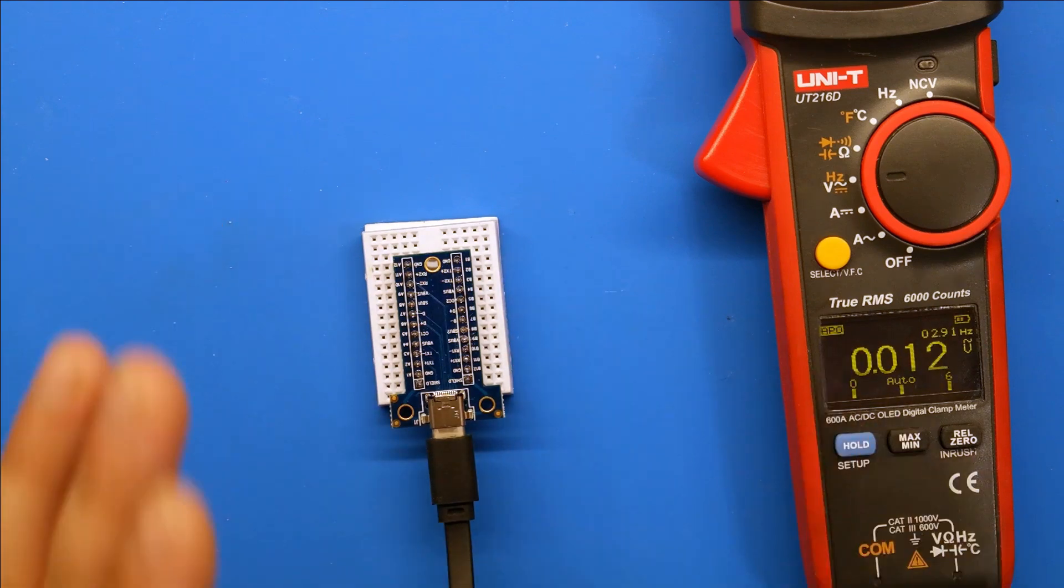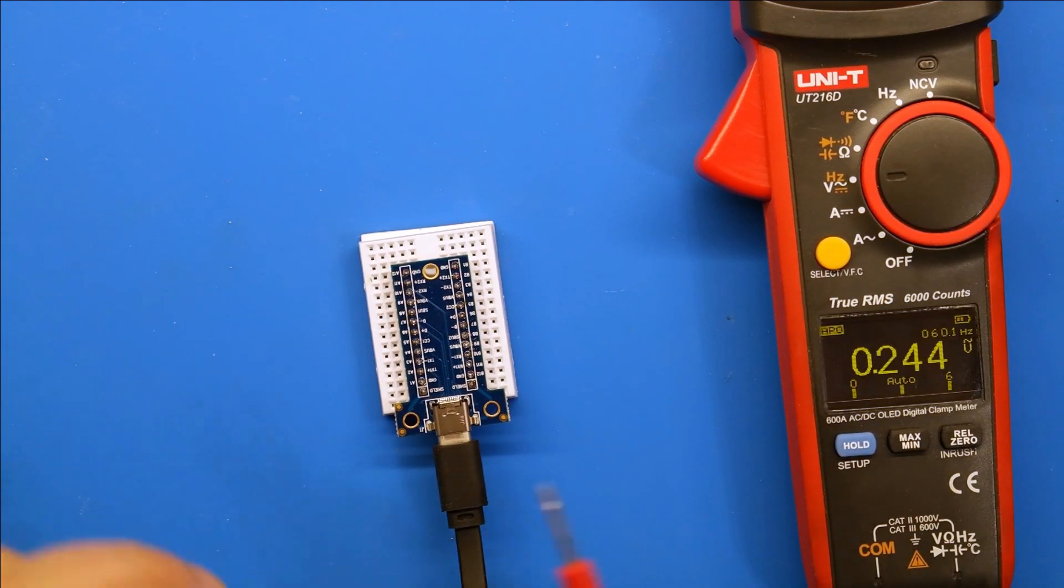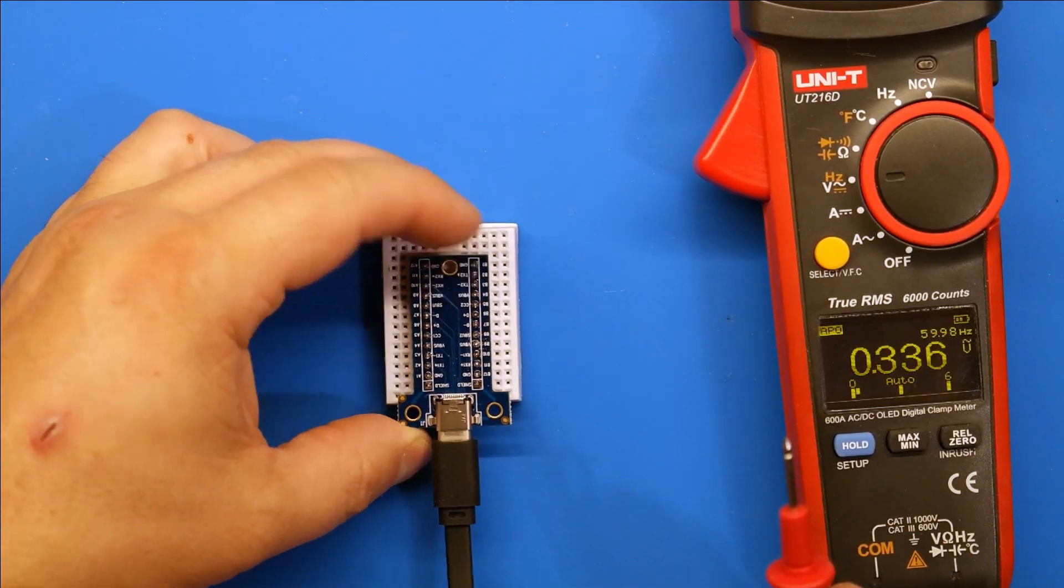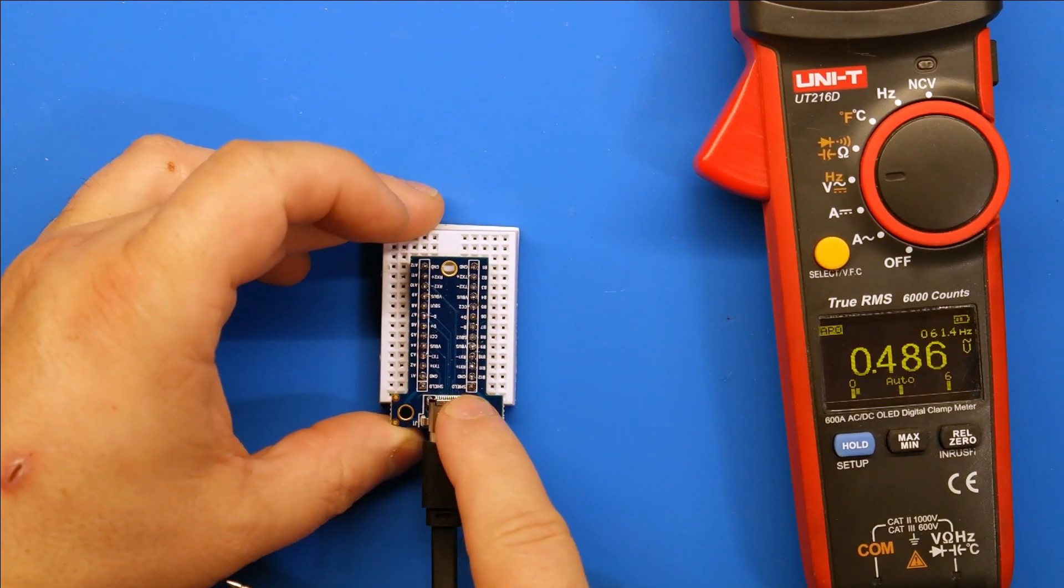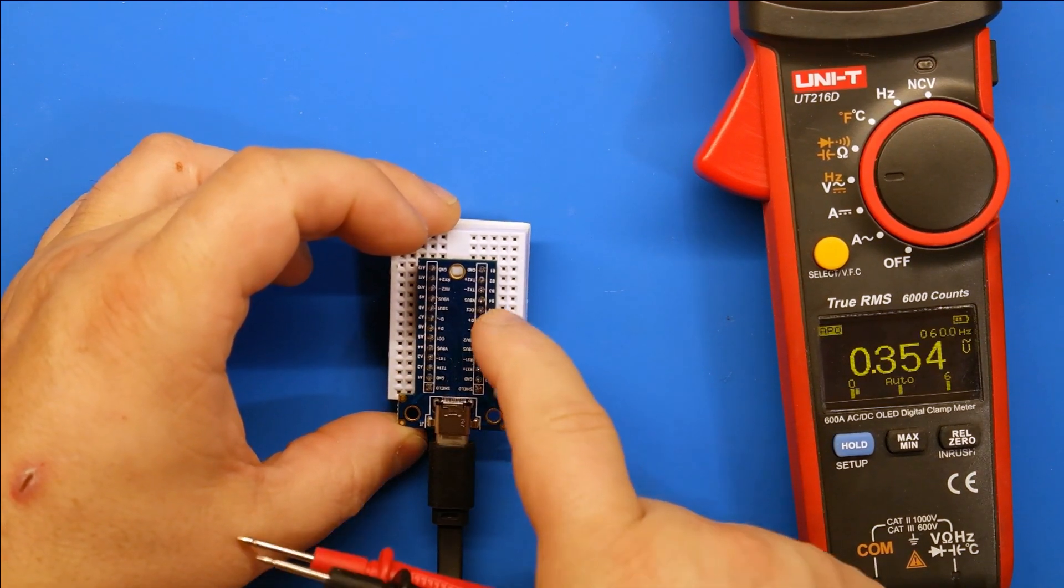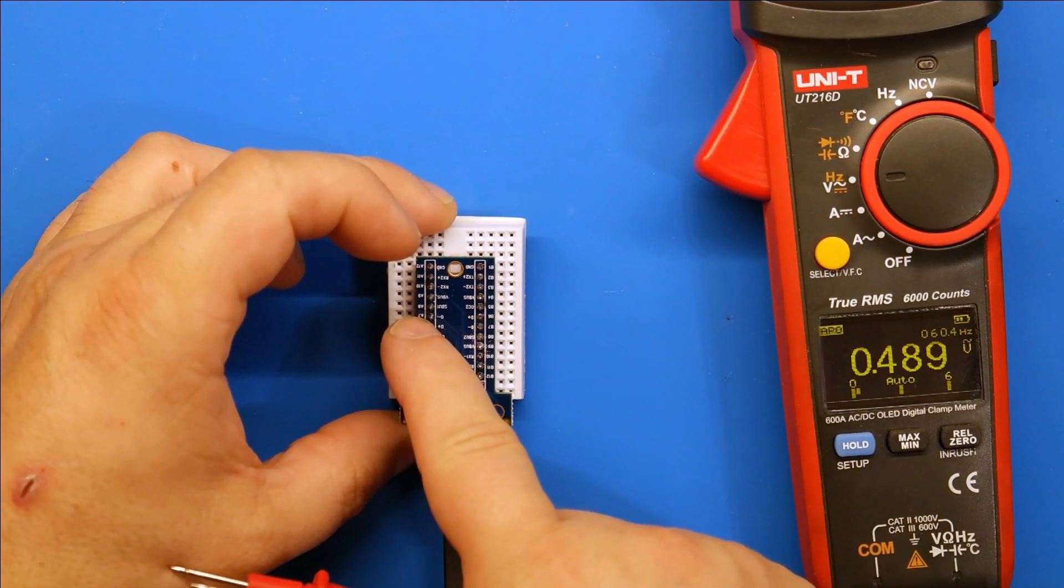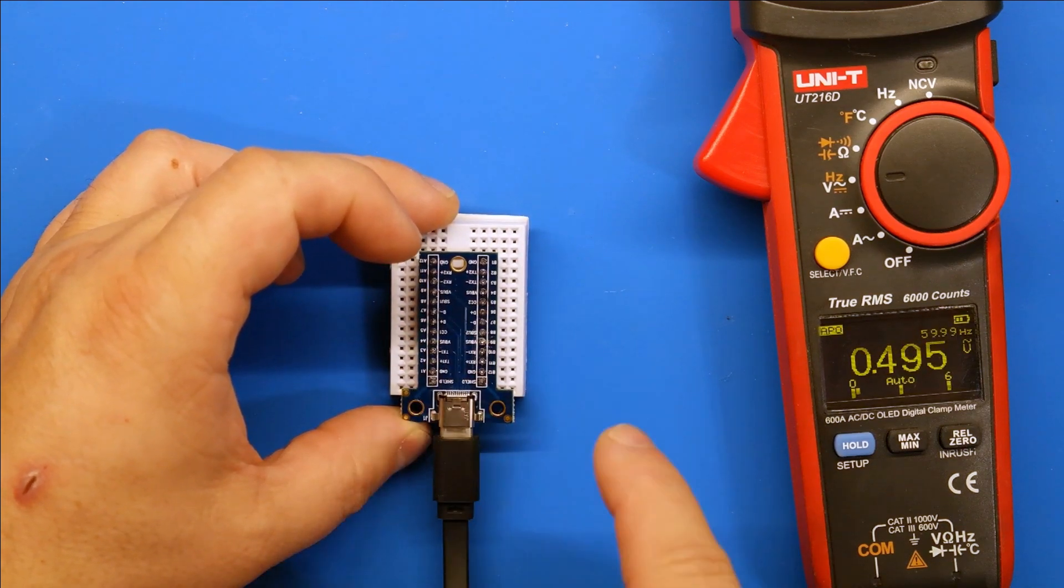So if we go here, the way it's pinned out, you got two grounds on the bottom, two grounds on the top, and then in between your two main data lines, you have your VUSBs. There's four of those pins.